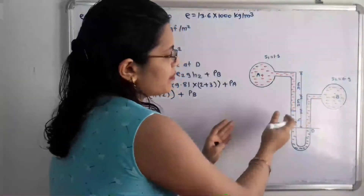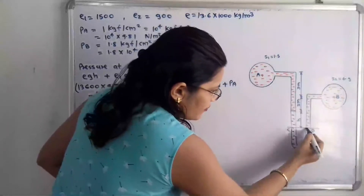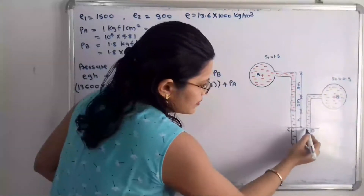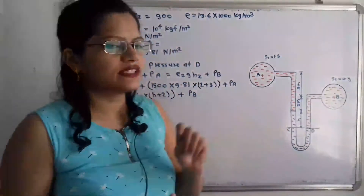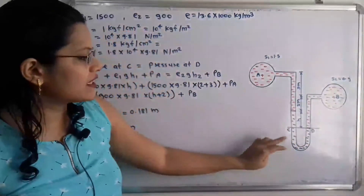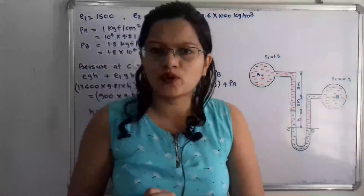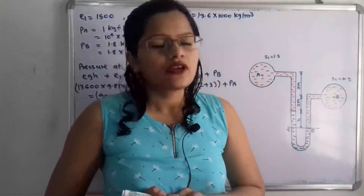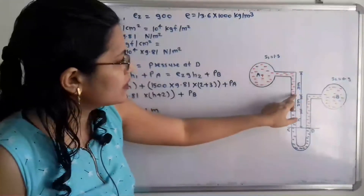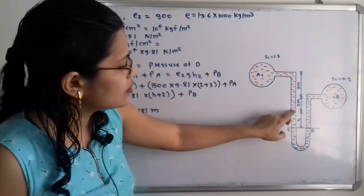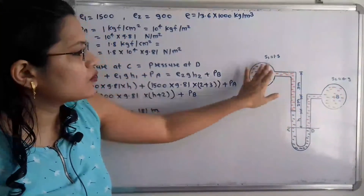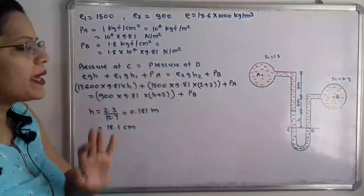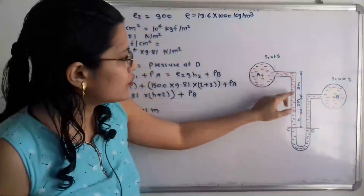Looking at the left and right side limbs, the lower mercury level is considered, and the line passing through this lower mercury level is the datum line CD. From the diagram, pressure above point C equals pressure above point D. For the pressure above point C, we have: pressure at pipe A (PA) plus pressure due to the fluid column of height 3 + 2 = 5 meters above C.